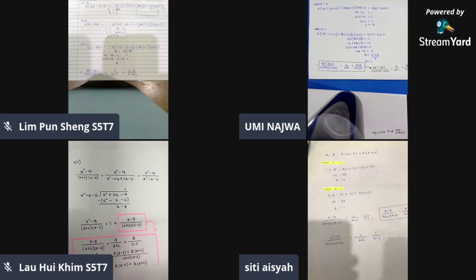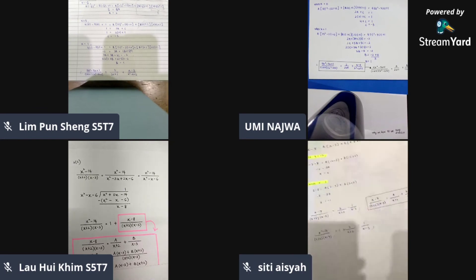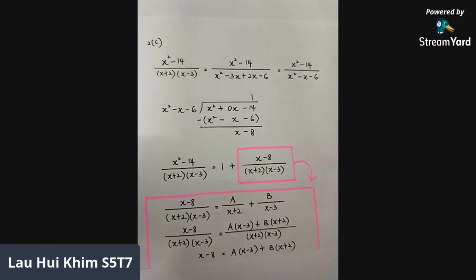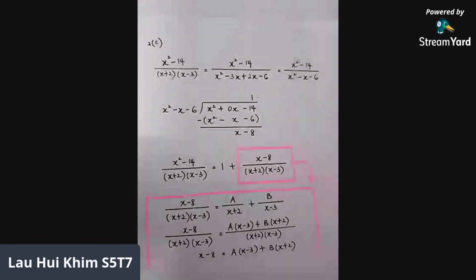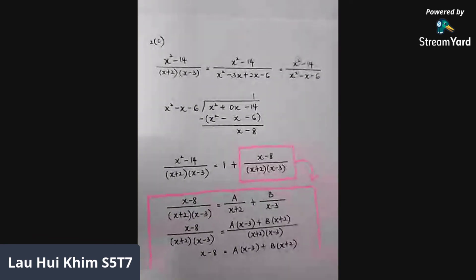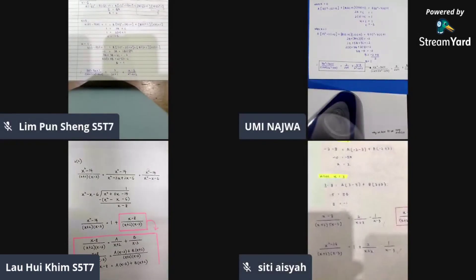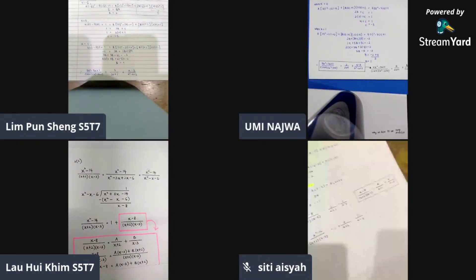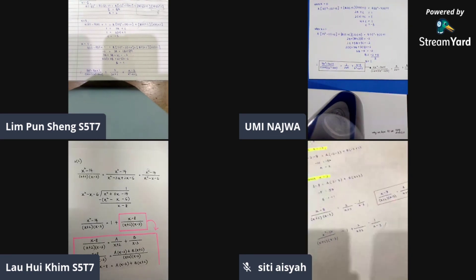Is there any questions? Yes. Can I ask why we have to use long division? Because this is an improper fraction where the degree of the numerator is the same as the degree of the denominator, which is 2. When we have to find partial fractions for an improper fraction, we need to do long division first. Is that clear? Yes, thank you. So I think we'll end our discussion here. Thank you, everyone.